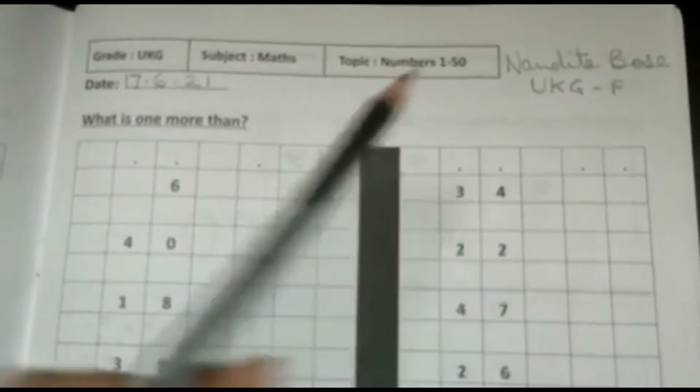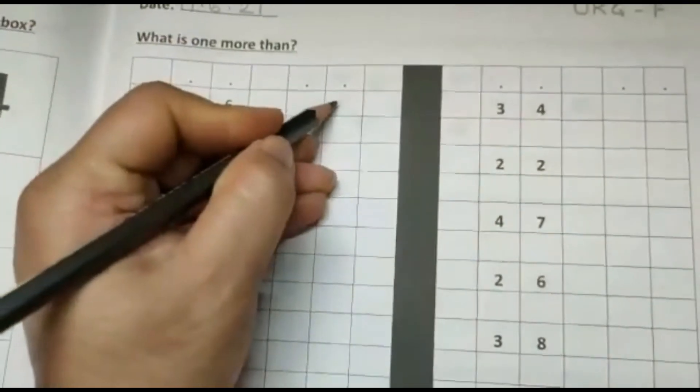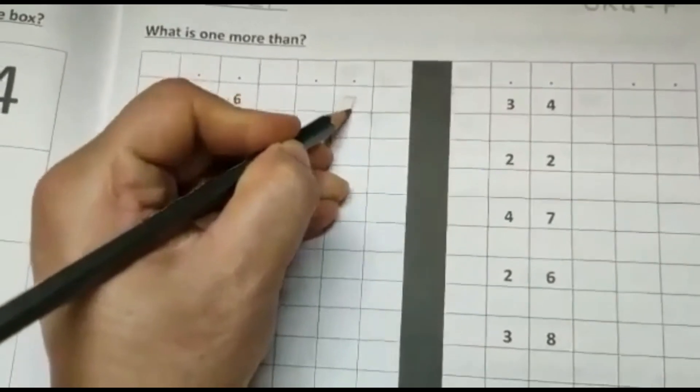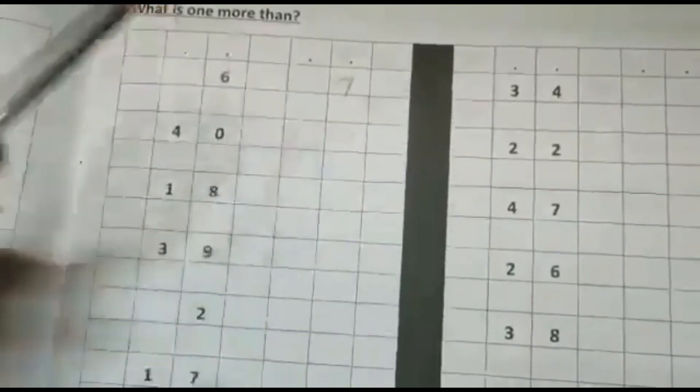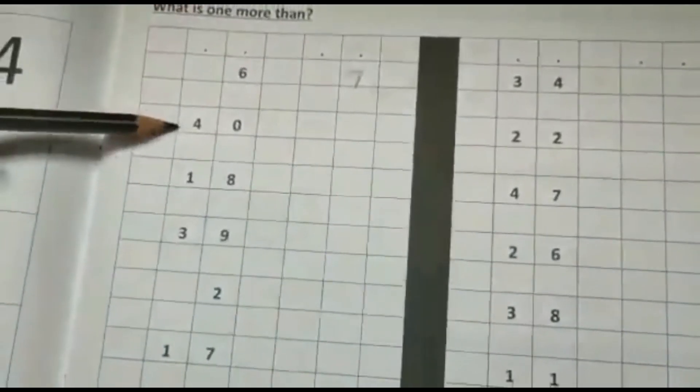What is one more than, so you have here a set of numbers and in front of them there are two dots, so you have to write the correct number here. Here, the first number is 6. What is one more than 6? It is 7. So, you will write under the second dot number 7 as it is a single digit number. Like that, what is one more than 40? It will be 41. So, here you will write under both the dots.